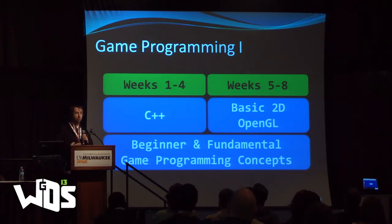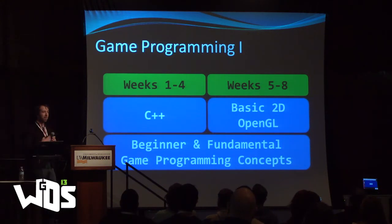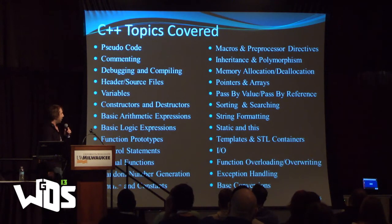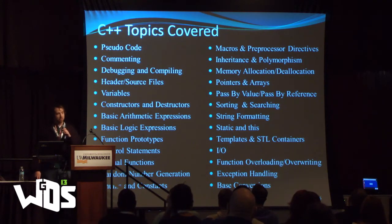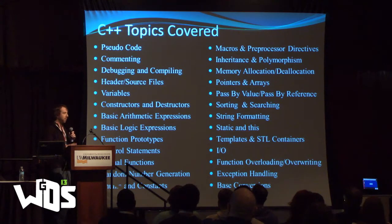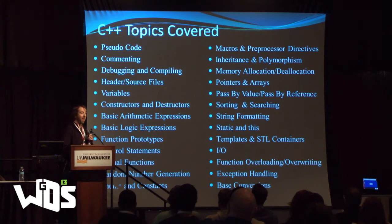Starting with weeks 5 through 8, we switch over to OpenGL and basic 2D game programming. But throughout the entire course, we're also talking about basic game programming fundamentals. As far as C++ goes, we cover all these topics: variables, functions, class definitions, object-oriented programming, sorting algorithms, input and output streams, and pointers. This is probably the hardest part of the entire sequence, because it's new for a lot of people. If they have no programming experience, C++ is brutal.